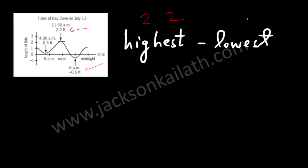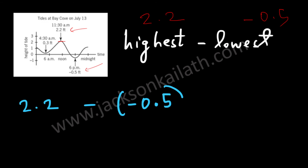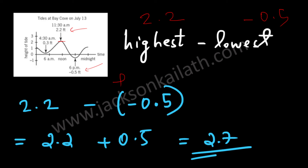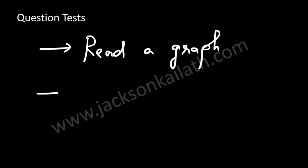The highest is 2.2 and the lowest is minus 0.5, so this becomes 2.2 minus minus 0.5. Minus of minus is plus, so this equals 2.2 plus 0.5, which is 2.7 feet. That is answer option E. You should be able to read a graph — that's something very important.